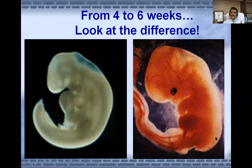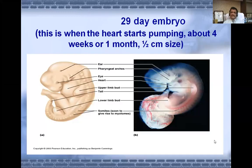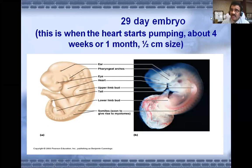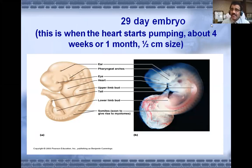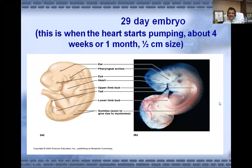By the end of the fourth week, the heart starts pumping. At this point the embryo is about half a centimeter — just 5 millimeters. Imagine how tiny the heart is. Life is formed on the first day, so it must have a heart that pumps. By seven weeks, the heart is fully pumping — another important landmark. The embryo at six weeks looks increasingly like a human being.